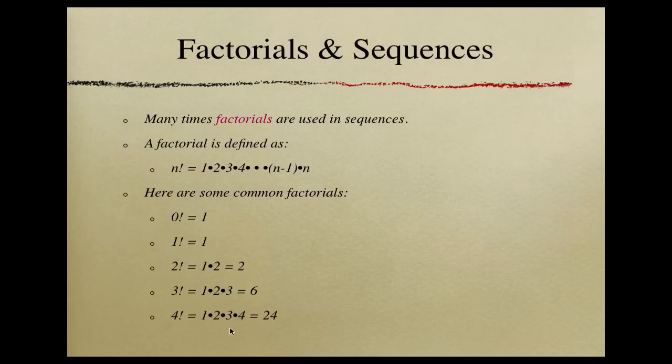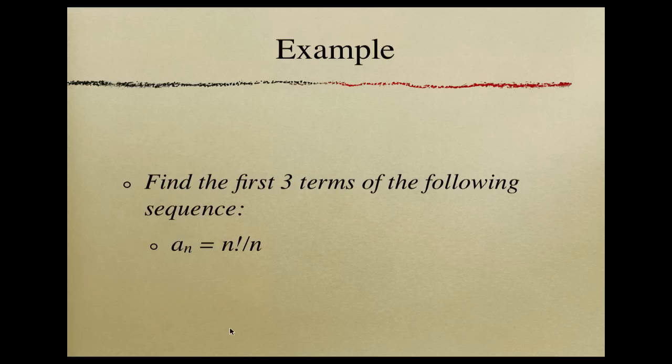Now we're going to actually put that into a sequence. So we have a sequence below. We need to find the first 3 terms. So that means we need to find a sub 1, a sub 2, and a sub 3. So a sub 1, we want n factorial over n. This is our n right here. So this means that we have 1 factorial divided by 1. Well, we know that 1 factorial from the previous slide is just 1. So 1 divided by 1 equals 1. That's our first term.